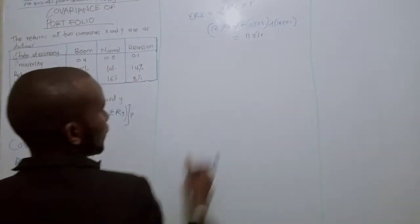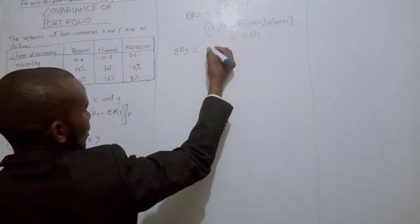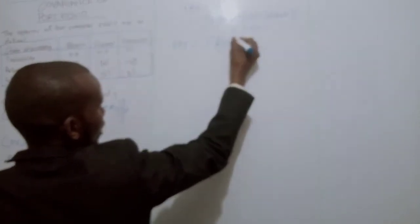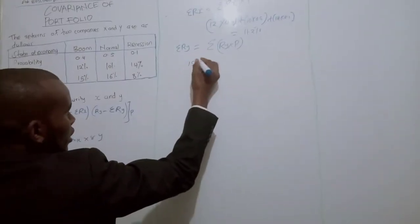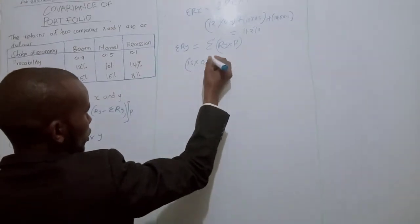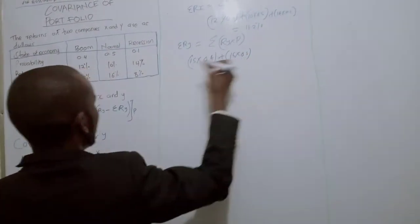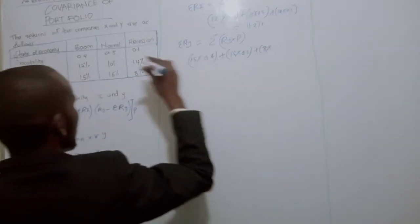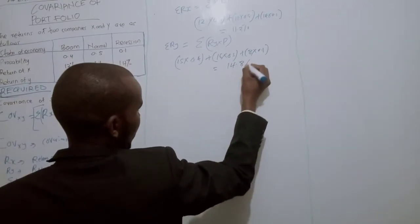Now let's get the expected return of Y, which is the summation of return of Y multiplied by the probability. The return of Y is 15 times 0.4, plus 16 times 0.5, plus 8 times 0.1. If you work this out — 15×0.4 + 16×0.5 + 8×0.1 — you get 14.8%.